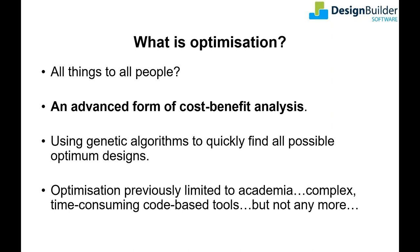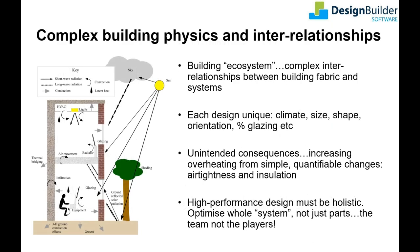In 2013, Design Builder introduced the first commercially viable optimization tool in a mainstream software package. Since then its capabilities have been significantly extended, making it a go-to option for many progressive design firms. Now let's look at some of the key concepts behind optimization and why it is an increasingly necessary part of the design process. A building is a complex ecosystem with thousands of different elements that interact with each other to determine how much energy it consumes, how much carbon it emits, and how comfortable it is to live and work in.